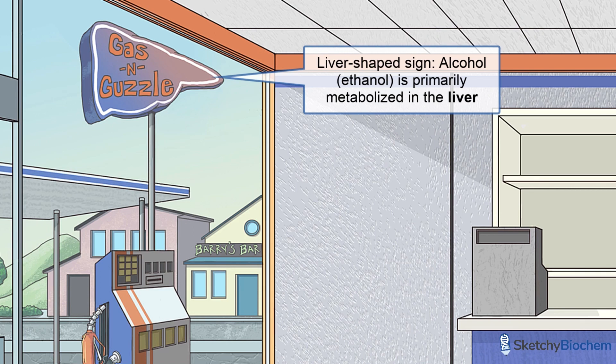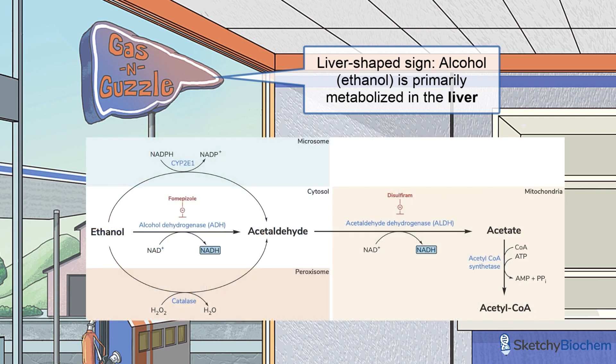As you probably already know, alcohol is primarily metabolized in the liver. The brain, stomach, and pancreas can also metabolize alcohol, but only small quantities. Alcohol is first metabolized in the cytosol, then in the mitochondria, as shown by this diagram.